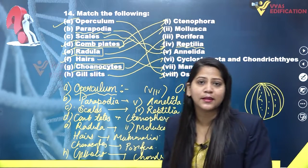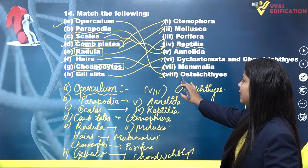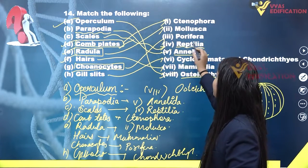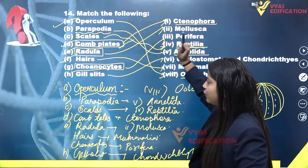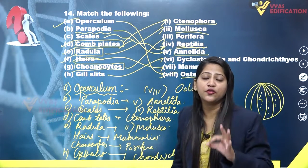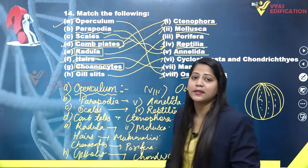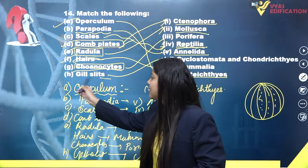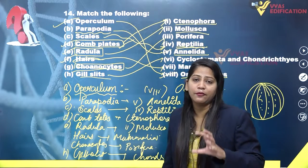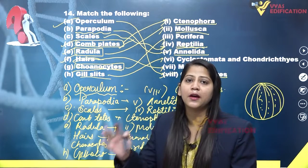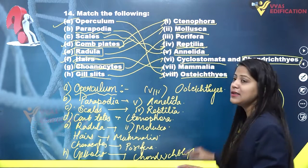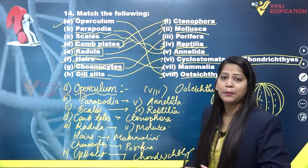So now we have completed question number 14. The complete solution: operculum matches with Osteichthyes; parapodia matches with Annelida; scales match with Reptilia; comb plates match with Ctenophora; radula is the rasping organ found in Mollusca; hairs are the characteristic feature of Mammalia; choanocytes are the characteristic cells of Porifera; and gill slits match with Chondrichthyes and Cyclostomata, as their gill slits are not covered with any operculum.